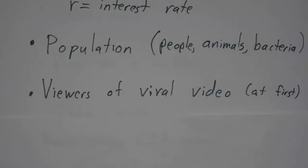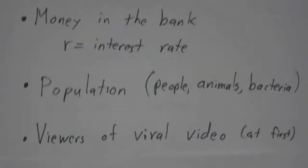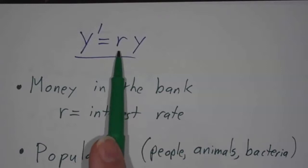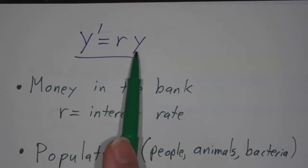You might think about a viral video. The more people see the video, the more people like it, the more people send the link to their friends, and the more new viewers it gets. So the rate at which new people watch the video is proportional to how many people have already watched it.